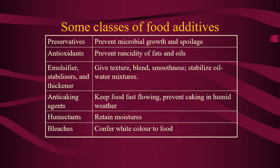Another class is emulsifiers, stabilizers and thickeners. This type of food additive gives texture, blends, smoothness, and stabilizes oil and water mixtures. As we know, water and oil are not miscible with each other, so when we add an emulsifier, the oil and water mixture can be mixed together to form what we call an emulsion. The next class is anti-caking agents, which keep food free-flowing and prevent caking in humid weather.